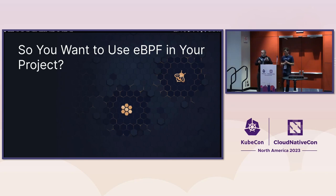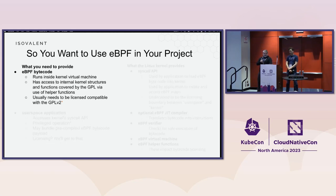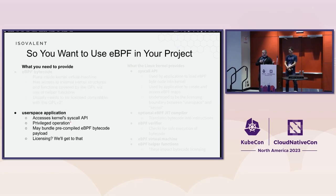So you now know why eBPF is great. But what do you have to actually provide when you're going to put eBPF in your project? The first thing you have to do is provide eBPF bytecode that needs to be loaded into the kernel. This is what ends up practically needing to interact with GPL code, so you have to be careful there. It's going to optionally interact with a user space application that you provide. This is normally what you do in a project — you'll have a user space application and eBPF bytecode, and this is the thing that usually does all your business logic and will interact via maps with the kernel.